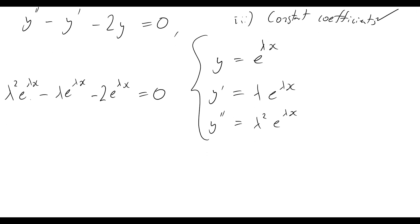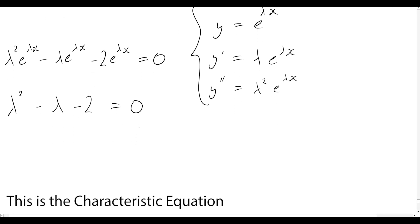Okay, so I can now just quickly divide through by e to the lambda x. And let's see what happens then. And all of a sudden, I'm simply going to be left with lambda squared minus lambda minus two equals to zero.